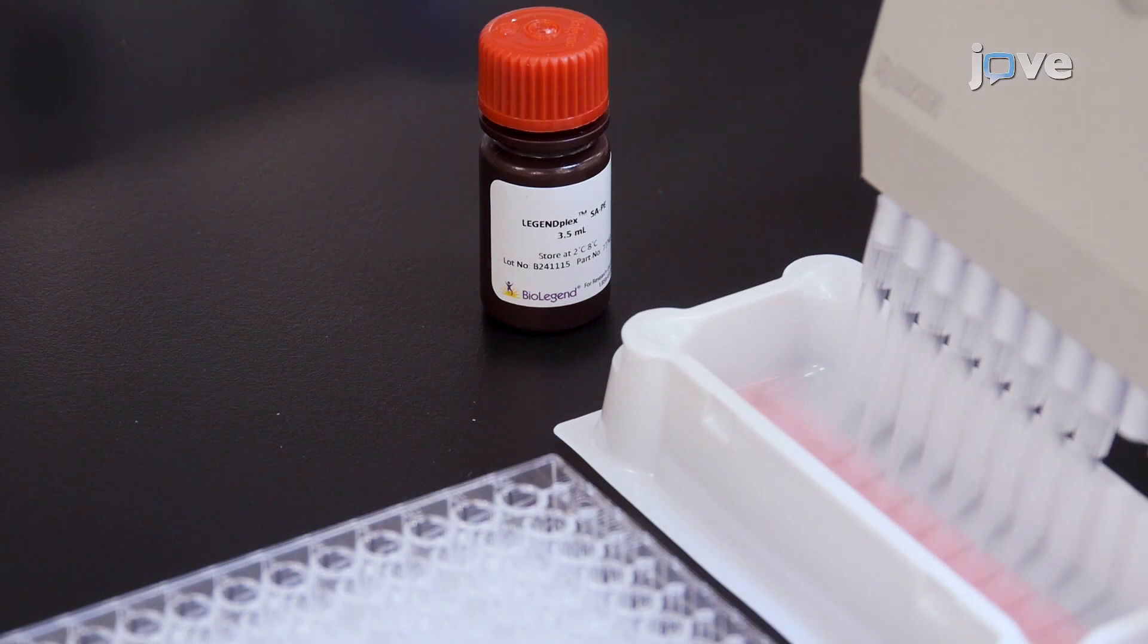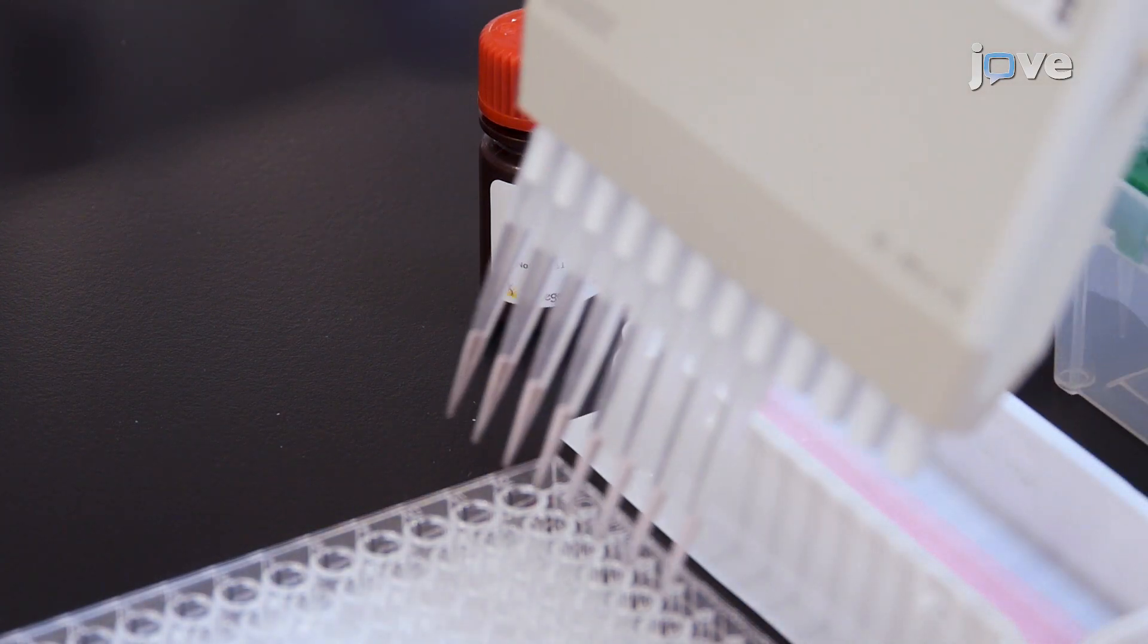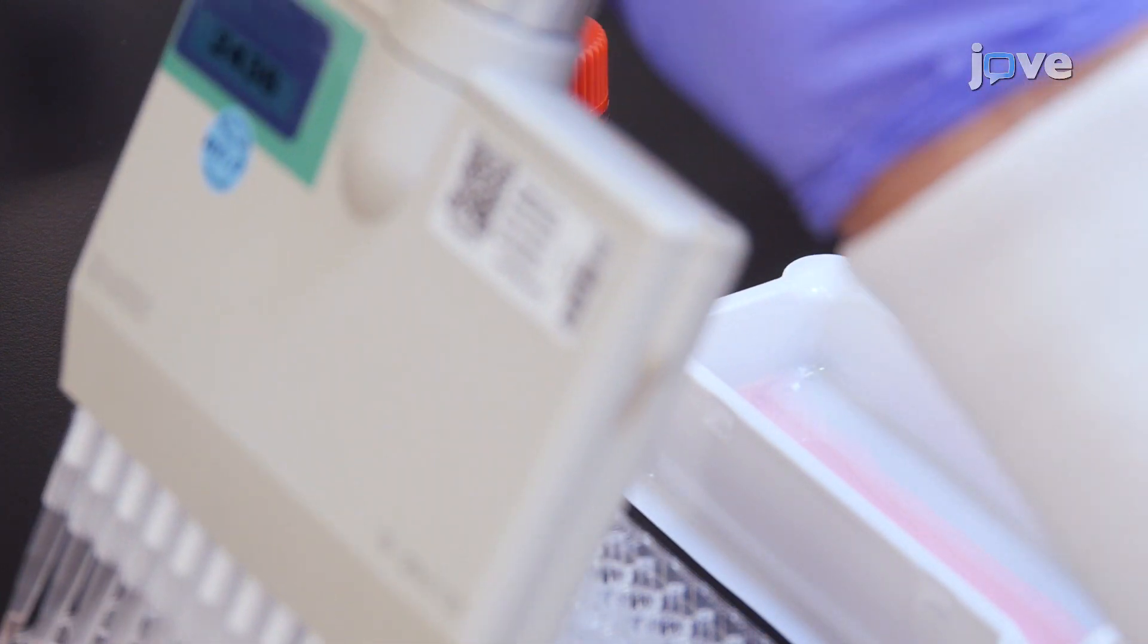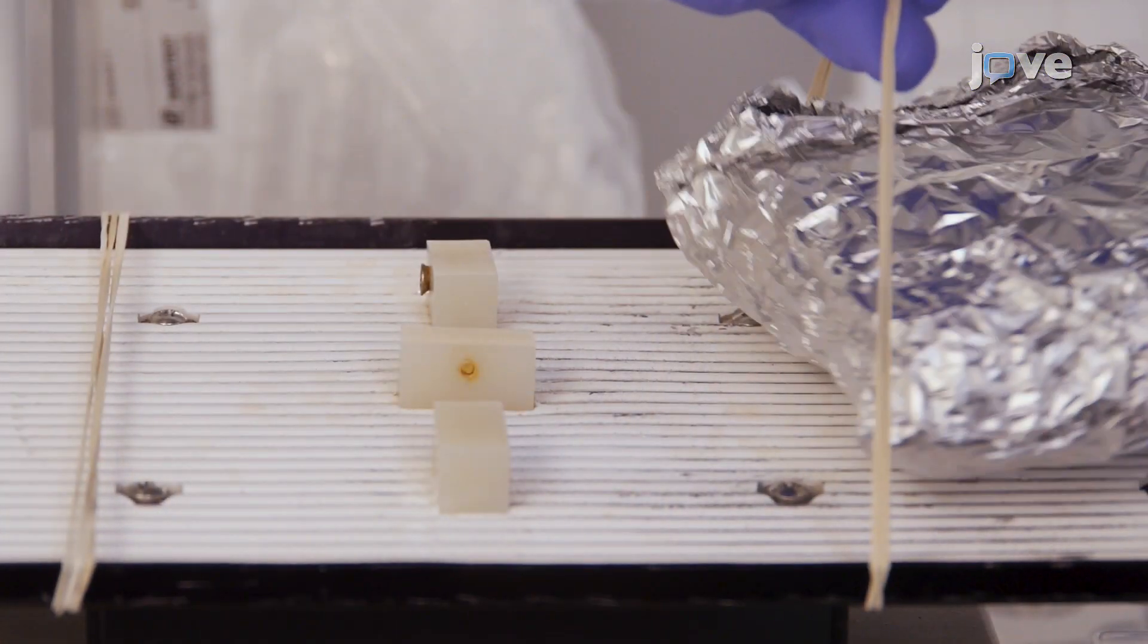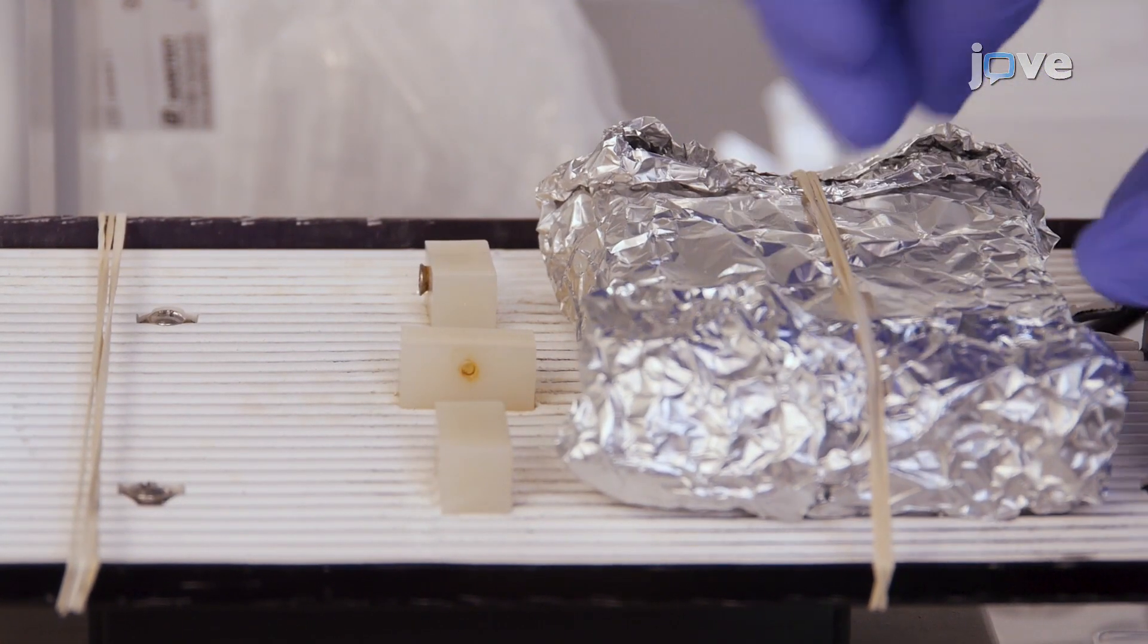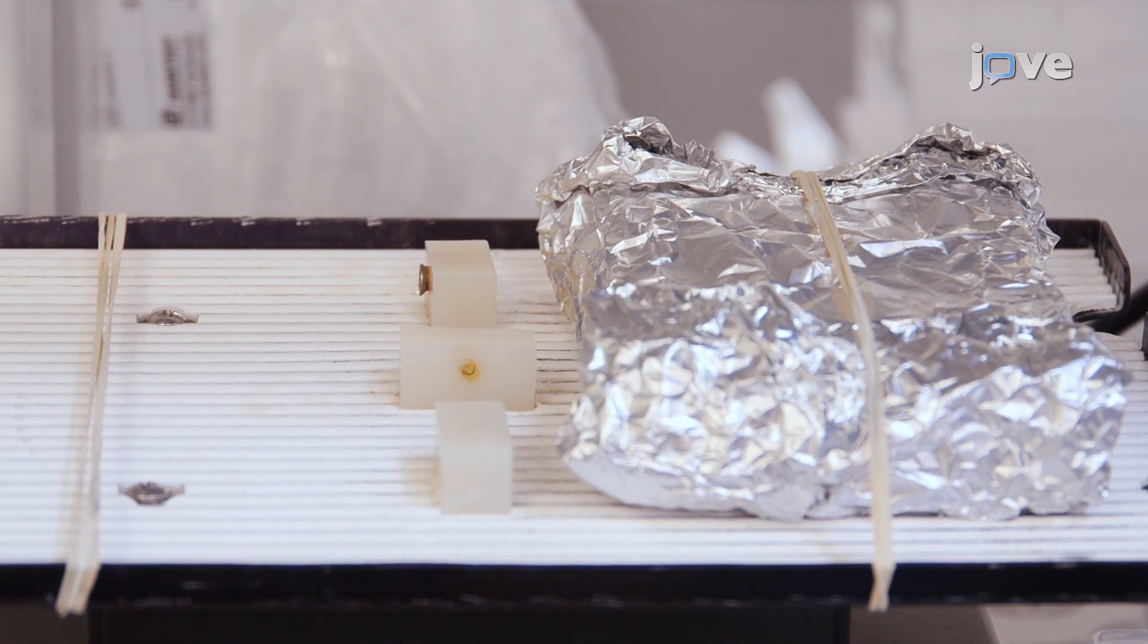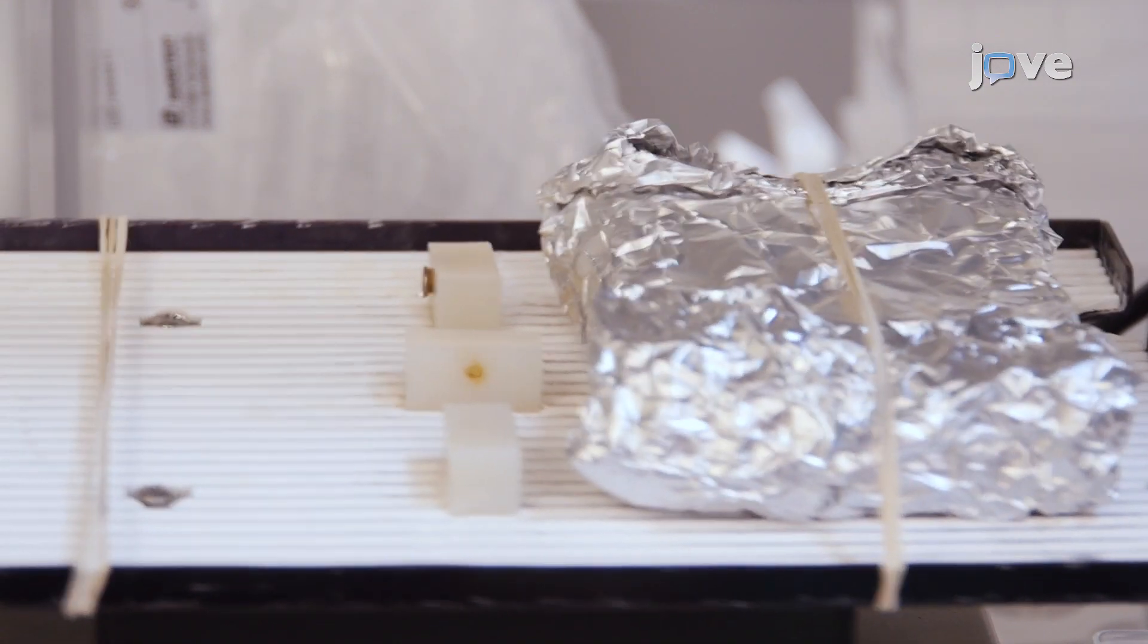Without vacuuming, add 25 microliters of streptavidin-phicoerythrin reagent directly to each well. Seal and wrap the plate as before. Then place the plate on a plate shaker, and shake at approximately 500 RPM for 30 minutes at room temperature.